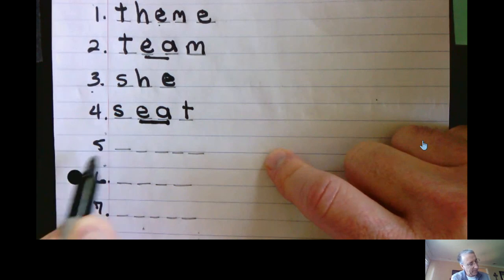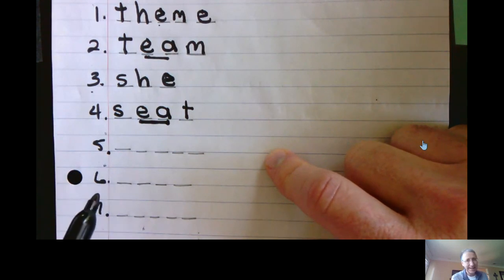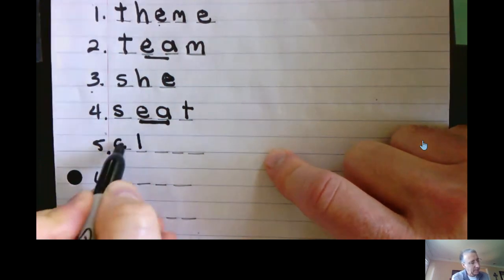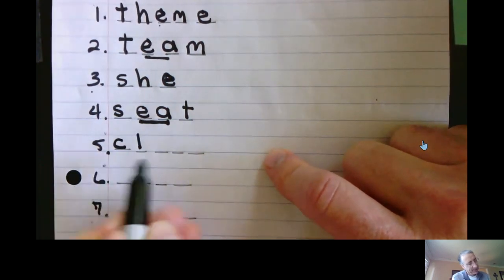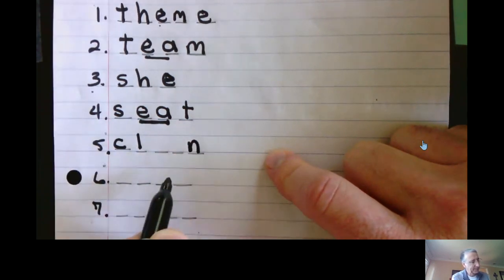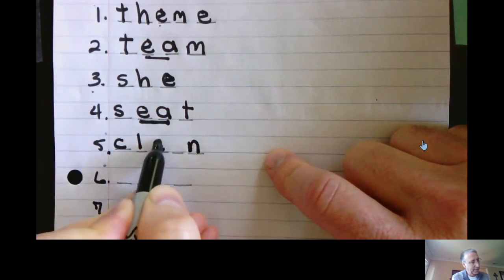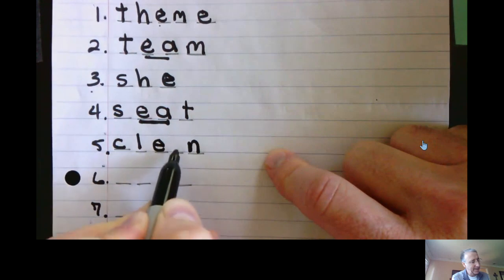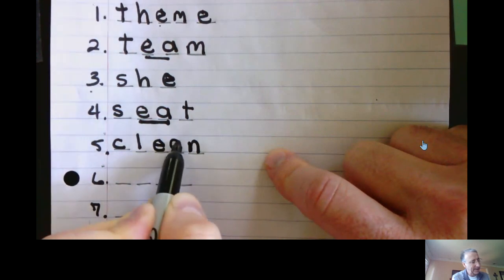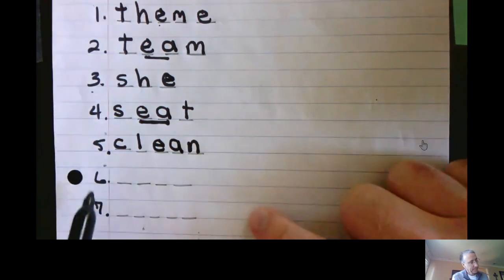Number five. Clean. I will clean up the mess. C-L-E-A-N. That sounds like an N. Two letters. Clean. Two E's or an E-A? Clean. Write that.